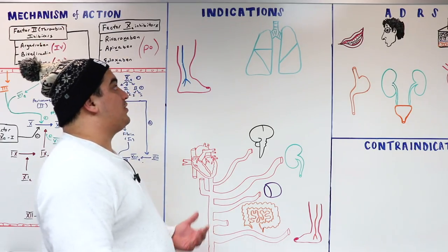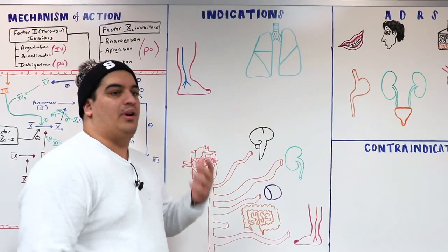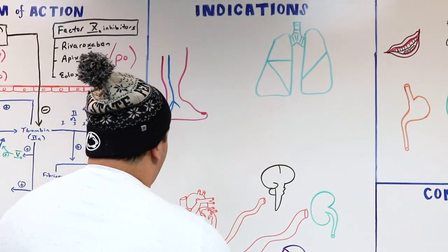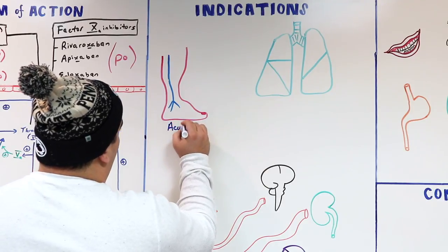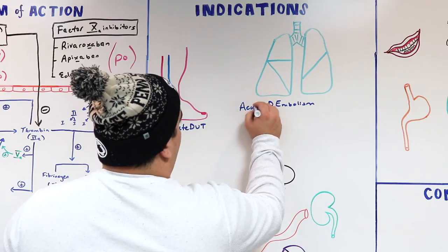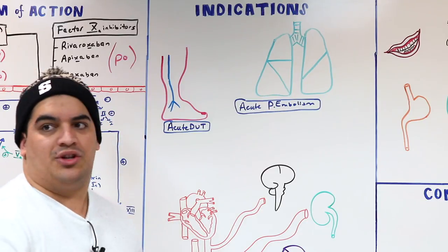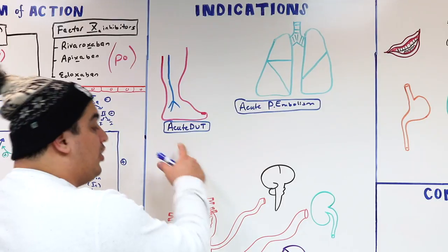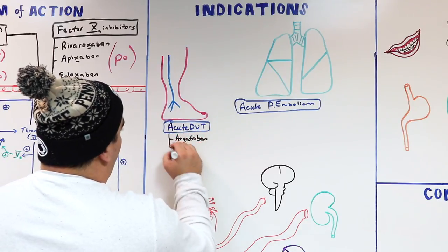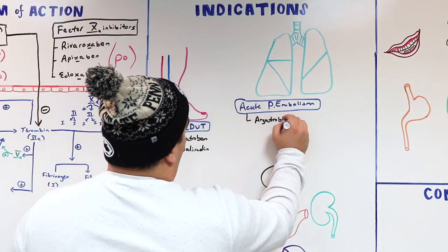These medications can be used similarly to heparin. If someone cannot take heparin due to heparin-induced thrombocytopenia, factor 2a inhibitors are indicated. For acute DVT or pulmonary embolism in patients who can't take heparin, you give the IV forms — argatroban or bivalirudin.